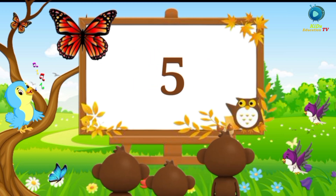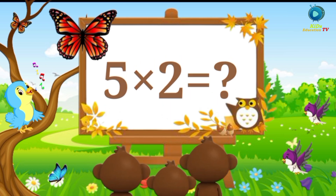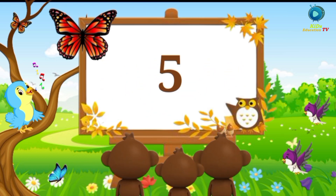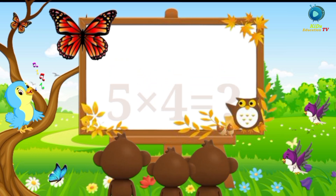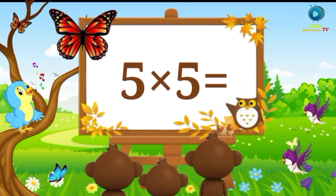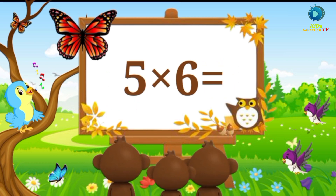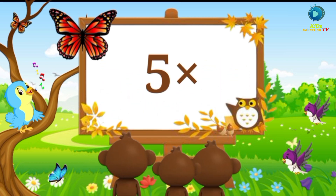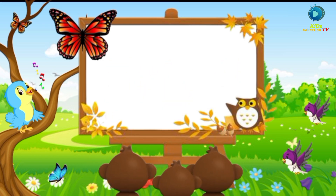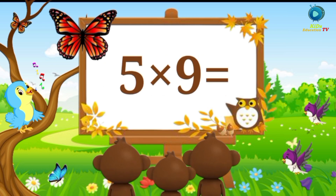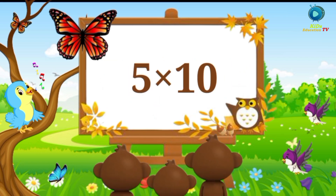Let's start again. 5 ones are 5, 5 twos are 10, 5 threes are 15, 5 fours are 20, 5 fives are 25, 5 sixes are 30, 5 sevens are 35, 5 eights are 40, 5 nines are 45, 5 tens are 50.